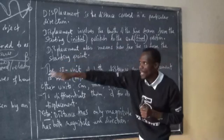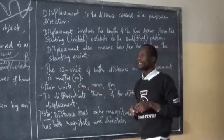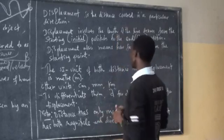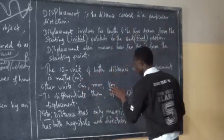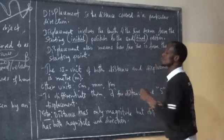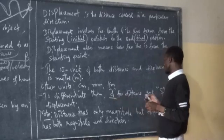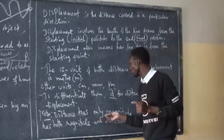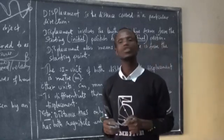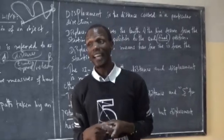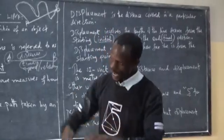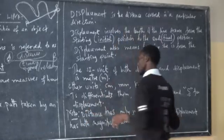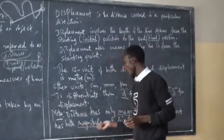The SI unit of both displacement and distance is the meter. Other units include centimeter, millimeter, kilometer, hectometer, decimeter, and so forth. To differentiate them in symbols: D is used for distance and S for displacement. Remember: distance has only magnitude but no direction. Displacement has both magnitude and direction.